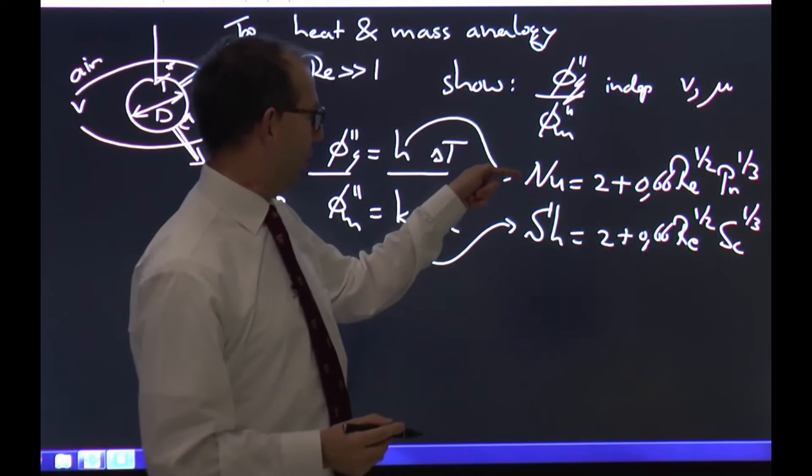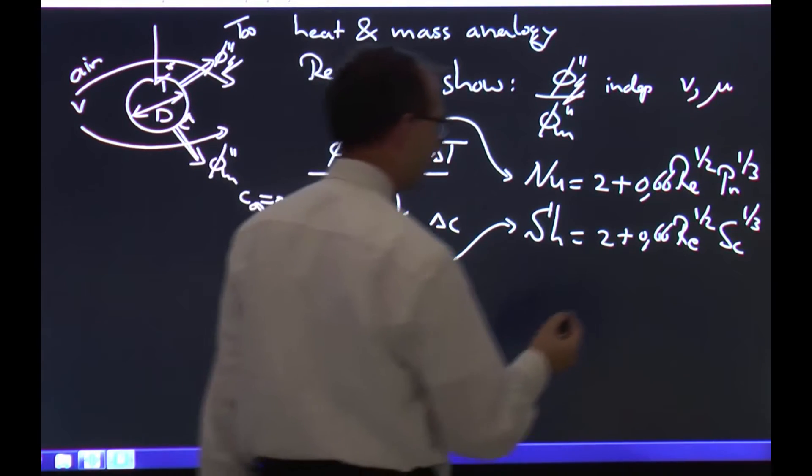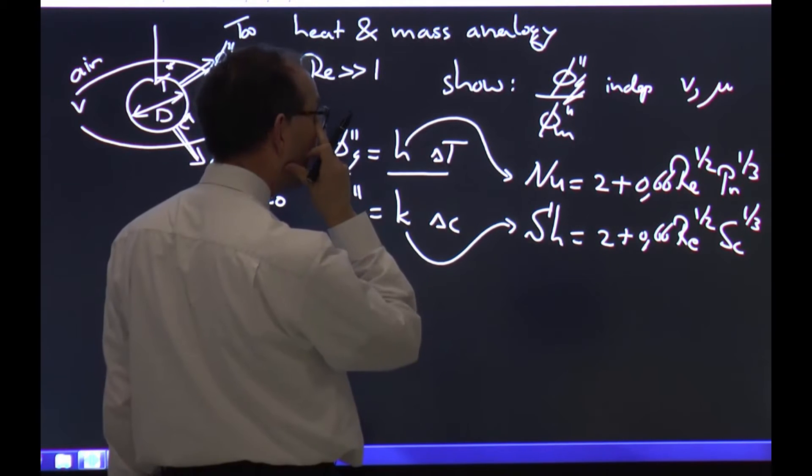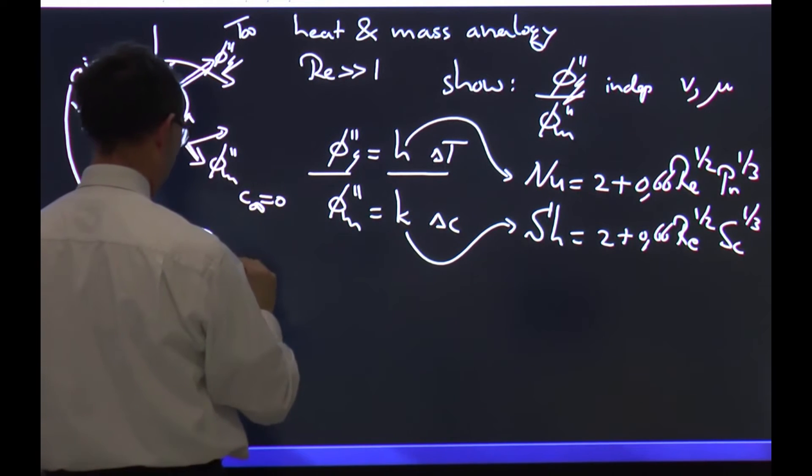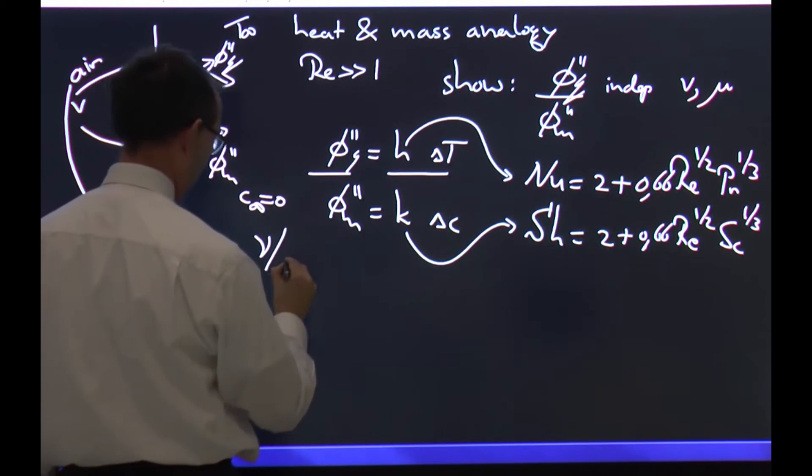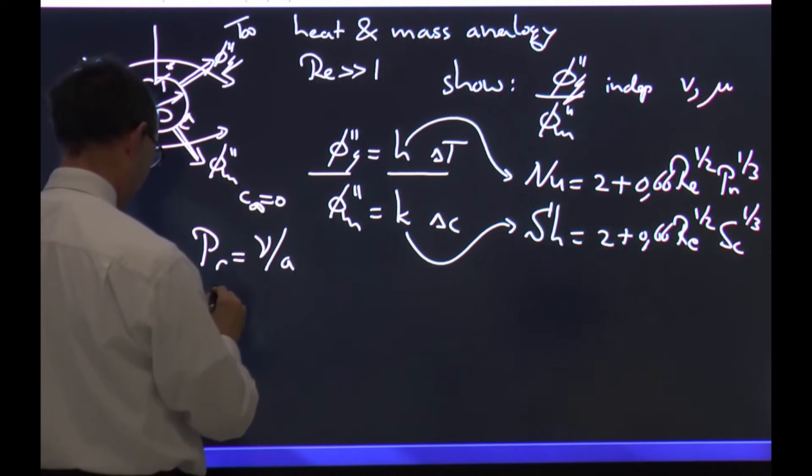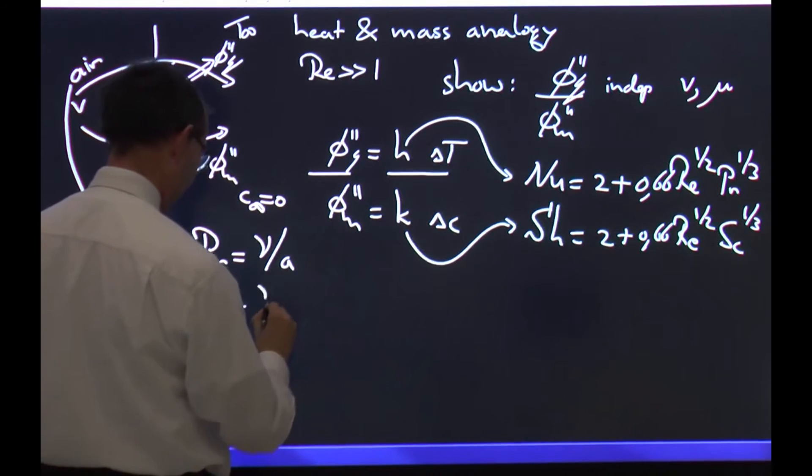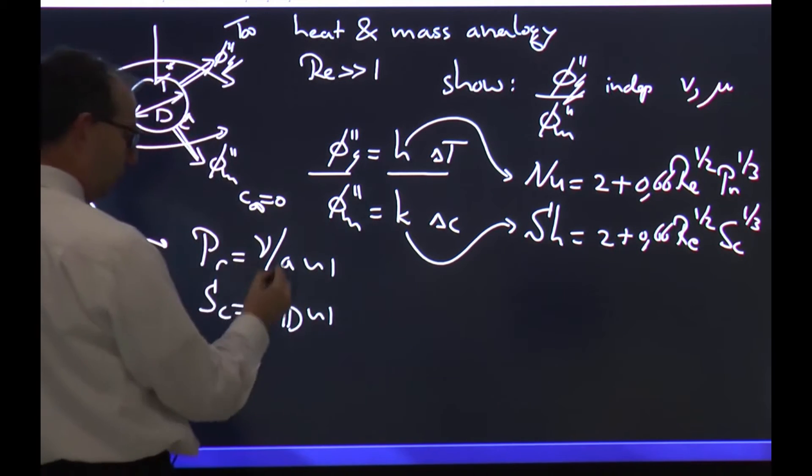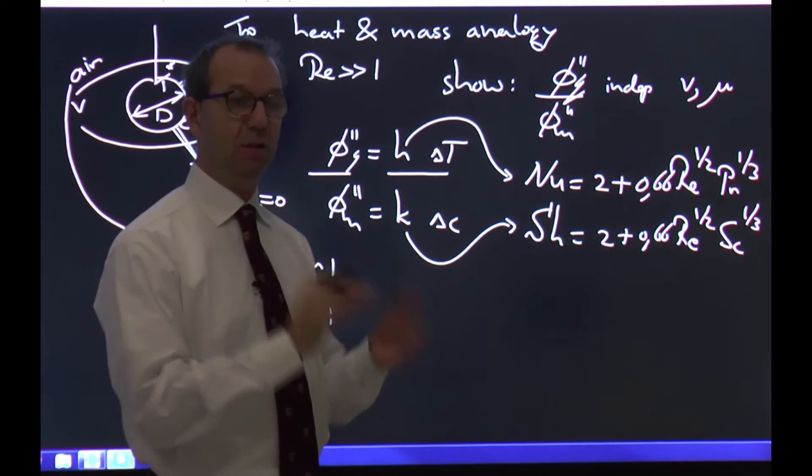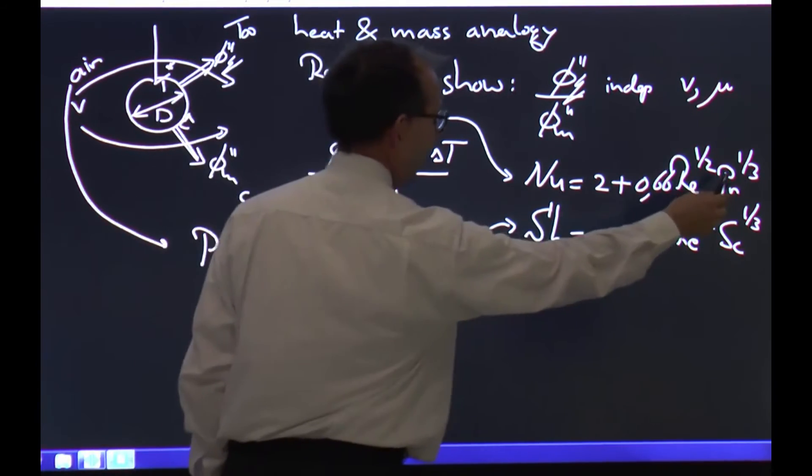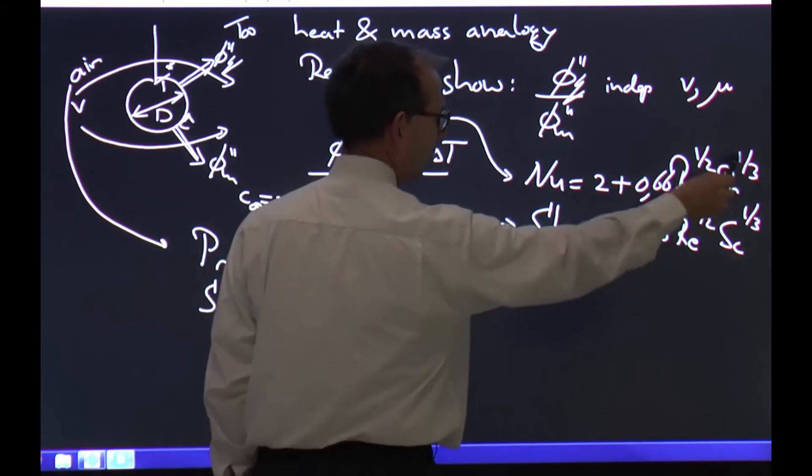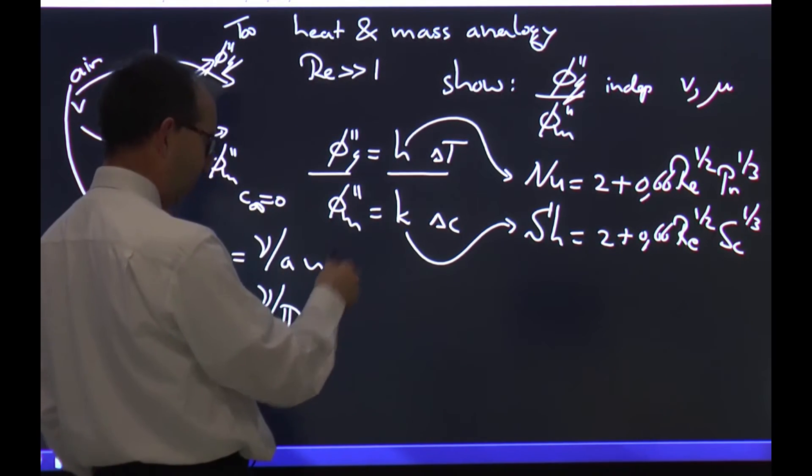The analogy says that if you know one, you know the other. Now I need the Prandtl and Schmidt numbers. If it's air, then Prandtl, being kinematic viscosity over thermal diffusivity, and Schmidt, kinematic viscosity over diffusion coefficient, both are order one. For air, kinematic viscosity, diffusion coefficient, and thermal diffusivity are all about the same. And I don't need to be very precise because they go to the power of 1/3, so if it's 0.9 it gets even closer.